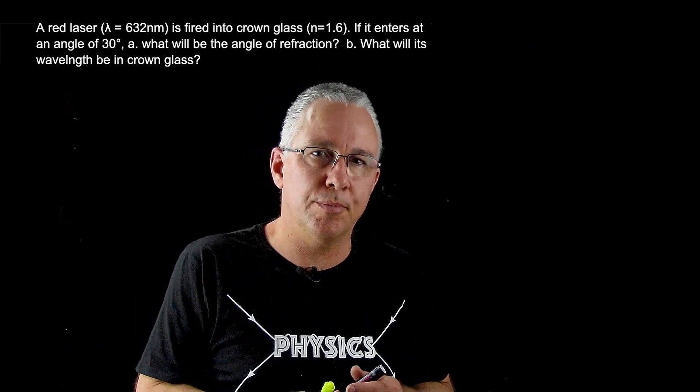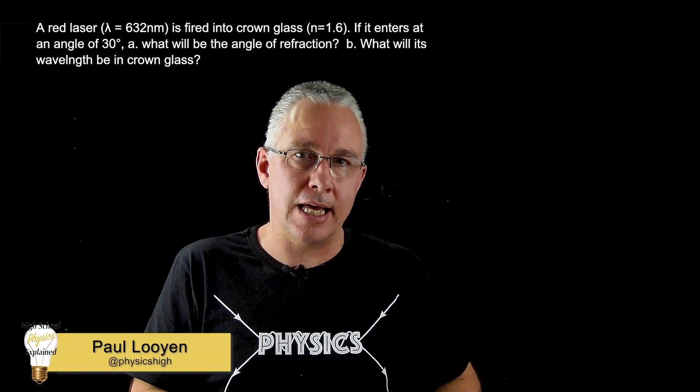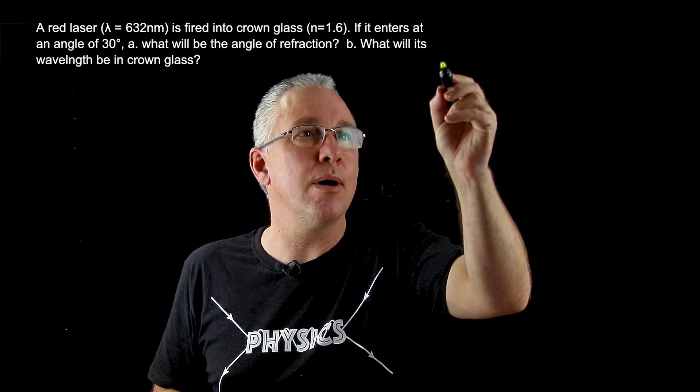So here is our Snell's law problem. What we have is a block of crown glass. Now crown glass has a particular refractive index of 1.6.